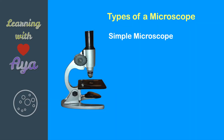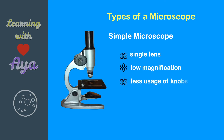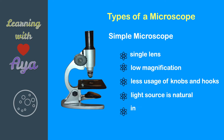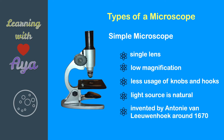Simple microscope: uses a single lens, low magnification, fewer knobs, uses natural light. Invented by Robert Hooke around 1670.